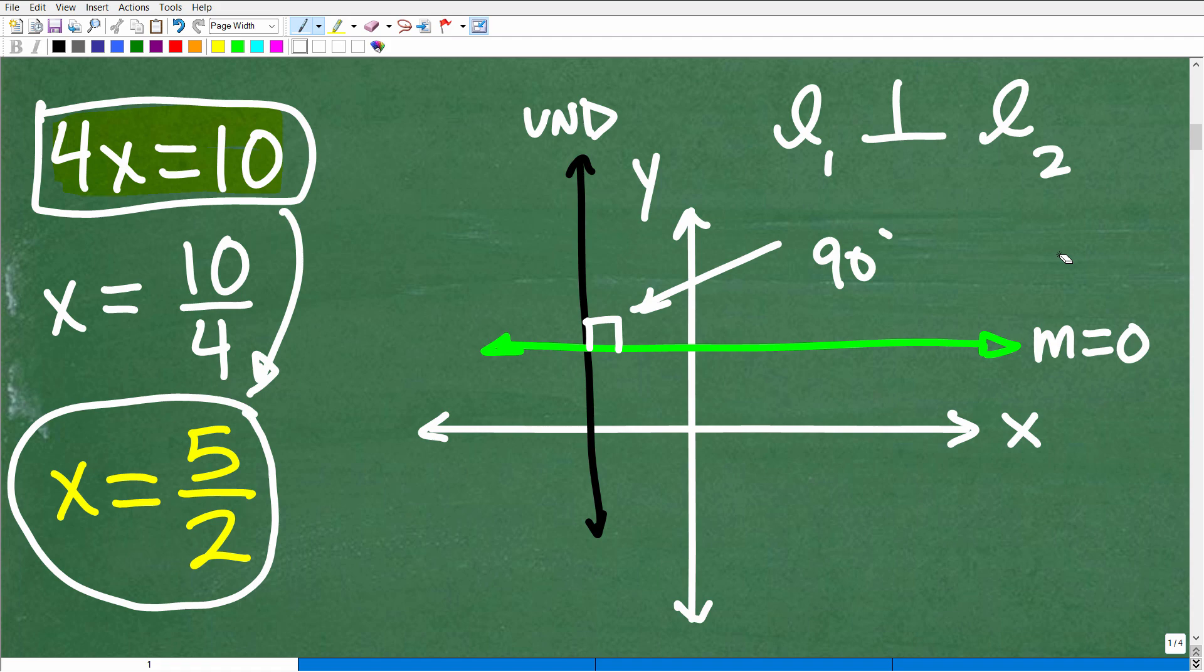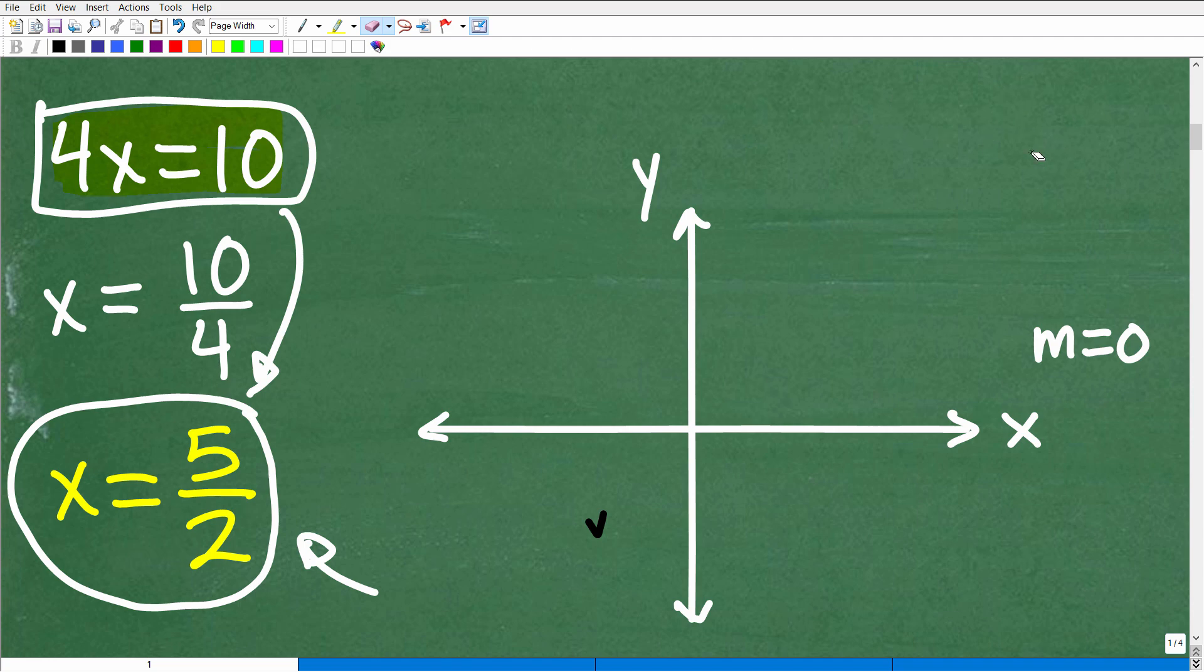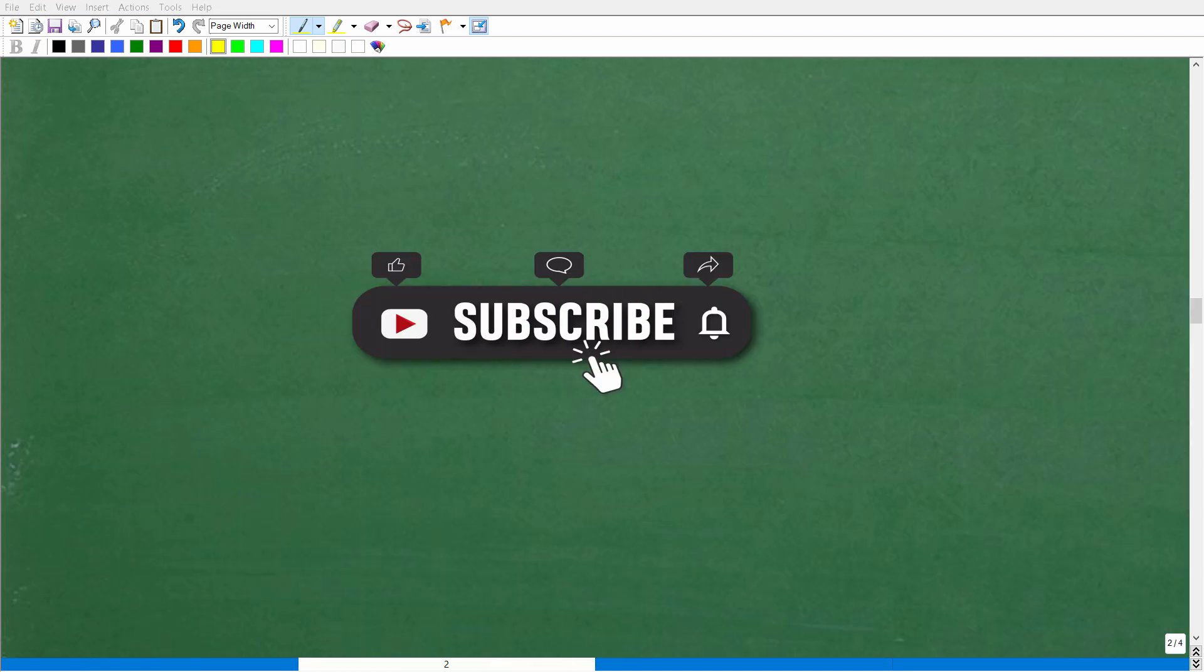The question is, what would be the slope of all lines that are perpendicular to this line here, x is equal to 5 halves? Let's go ahead and answer the question right now. But in order to answer this question, you really needed all this background information that I had to give. So x equals a number. How do we graph that?